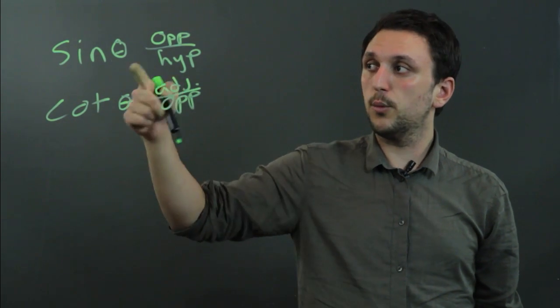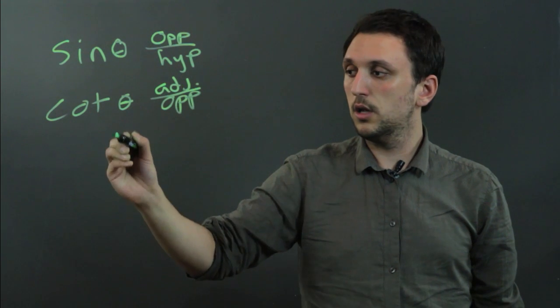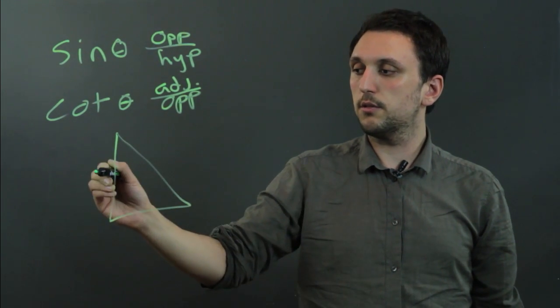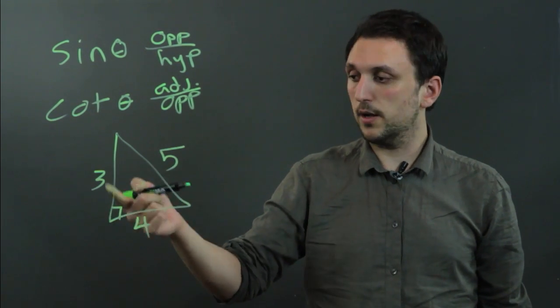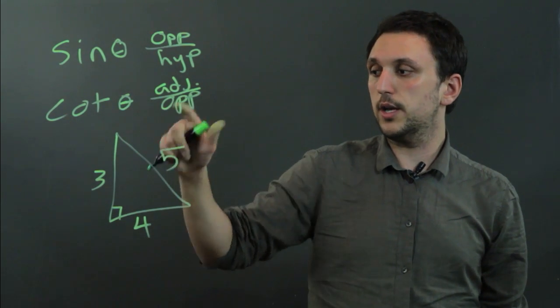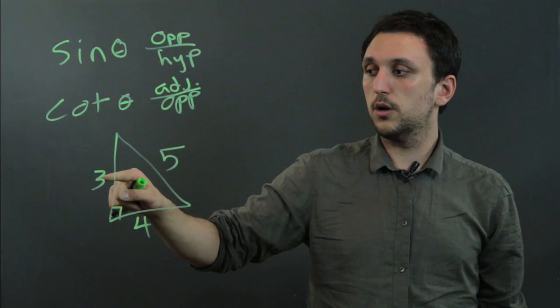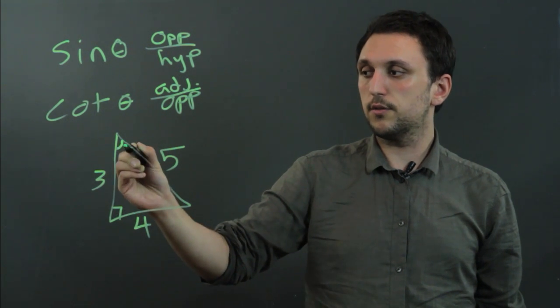Now if we're dealing with the same right triangle, let's say we have a triangle that is 3, 4, 5, a special right triangle. Now we know that cotangent theta would be 4 over 3, depending if this is theta.